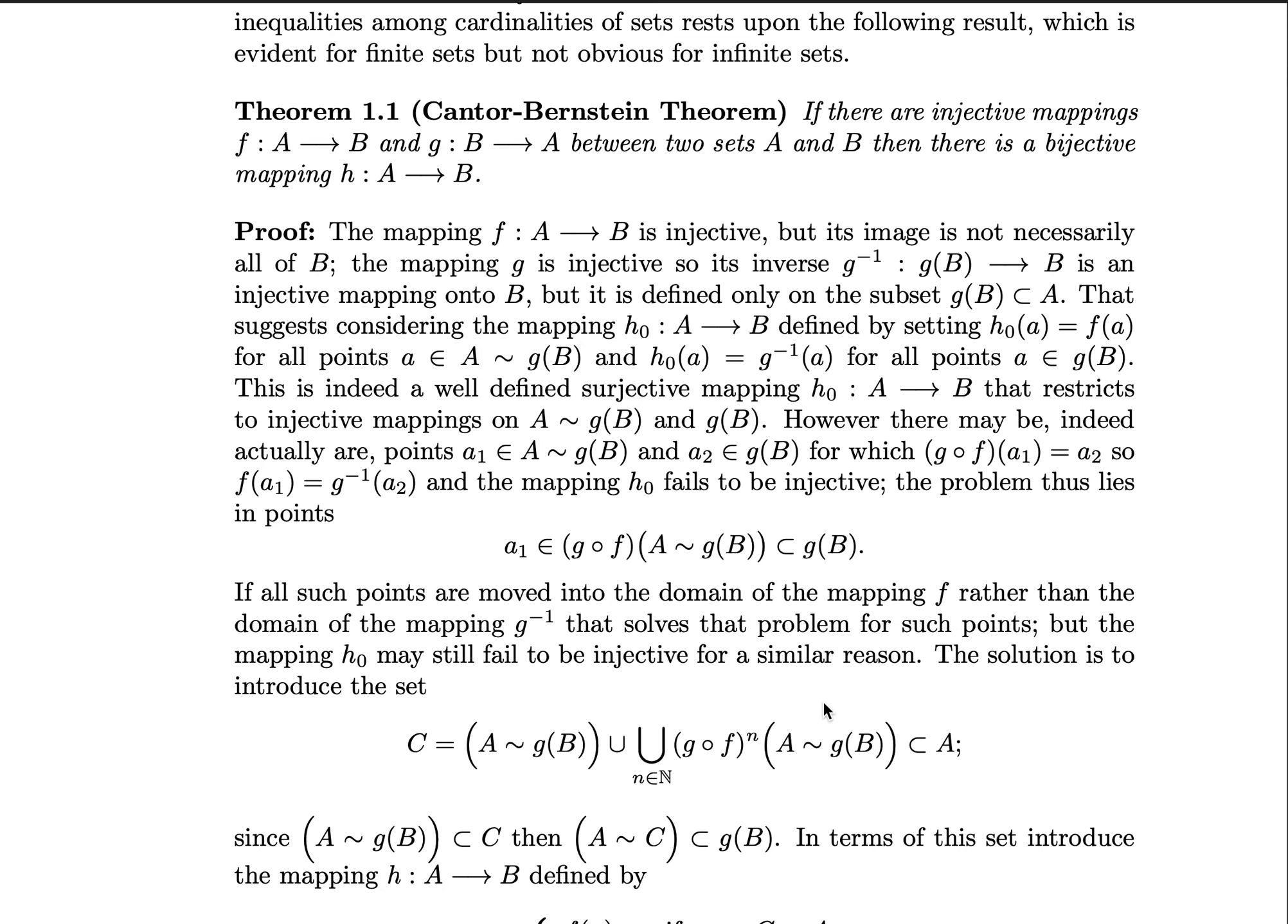So to begin the proof, we just consider the definitions of injective, namely that since the mapping f from A to B is injective, equal elements get set to equal outputs, but its image is not necessarily all of B. Clearly, it could be sent to a subset of B.